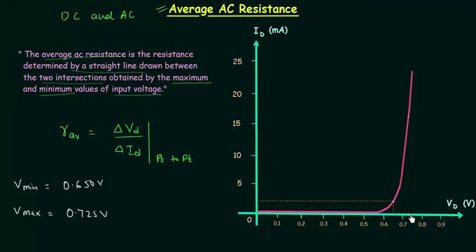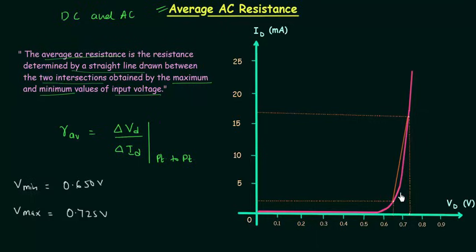In the same way, this is 0.725, and when you extend it you will have another point — the second point — and the corresponding current. By connecting these two points we have a straight line, and this straight line represents the average AC resistance.